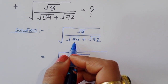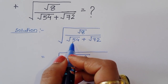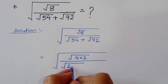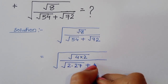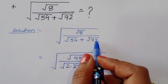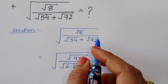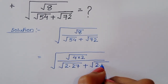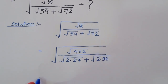Factoring 54 gives 2 times 27, so we write square root of 2 times square root of 27. Then for 72, the biggest factor is 2 times 36, so we write square root of 2 times 36.